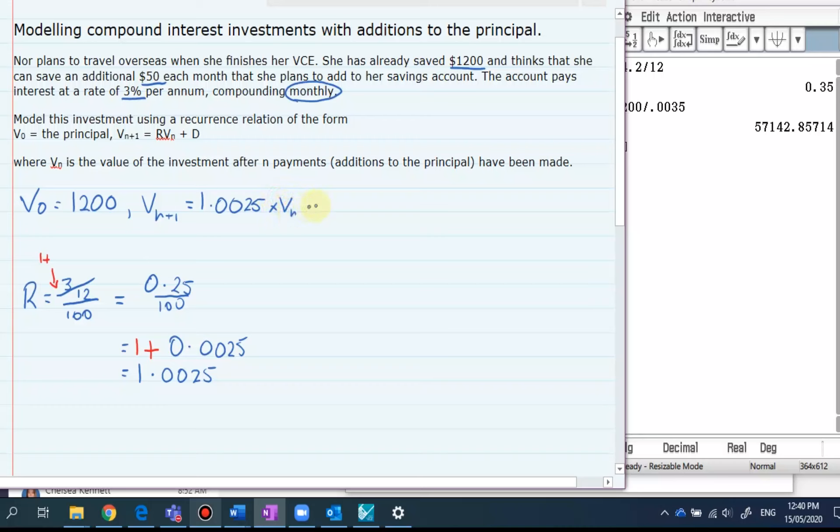Times Vn and every month Noor is going to be able to pay in an extra $50. Okay so that there is our recurrence relation. Okay hopefully that's pretty easy by now.